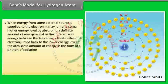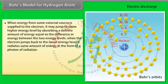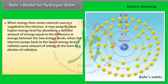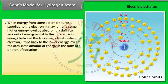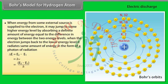When energy from some external source is supplied to the electron, it may jump to a higher energy level by absorbing a definite amount of energy equal to the difference in energy between the two energy levels. When the electron jumps back to the lower energy level, it radiates the same amount of energy as a photon: ΔE = E₂ − E₁ = h·nu.